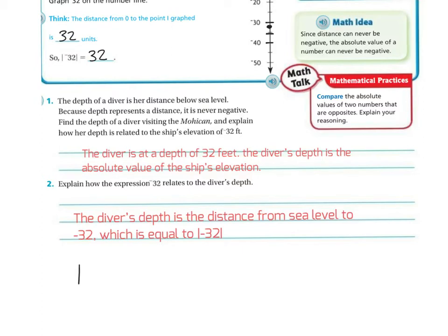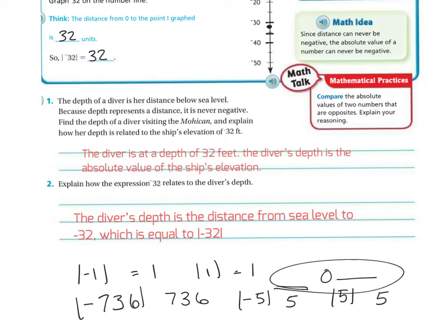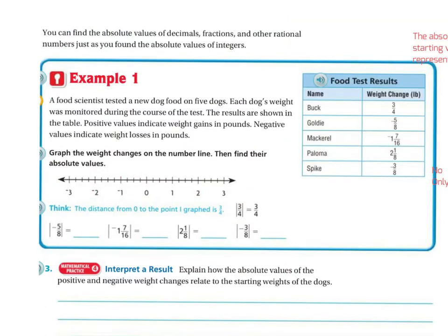The absolute value of negative 1 is 1. The absolute value of 1 is also 1, because it's simply the distance from 0. The absolute value of negative 736 is 736. The absolute value of negative 5 is 5, and the absolute value of positive 5 is also 5 — it's simply the distance of the number from 0. You can find the absolute values of decimals, fractions, and other rational numbers just as you found the absolute value of integers.